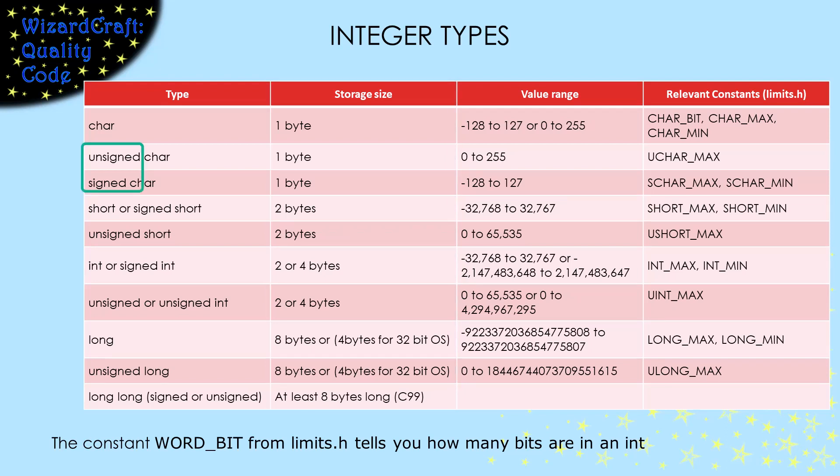The second way the types vary is whether they are signed or unsigned. If an integer is signed, that means that it can hold negative numbers. If you want to know more about how that's done, check out the video at the top of the screen.